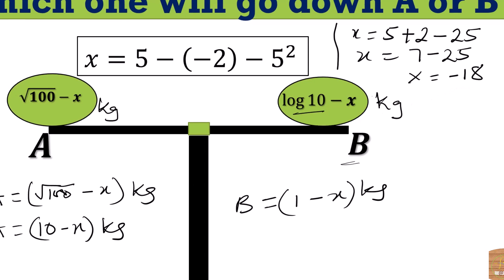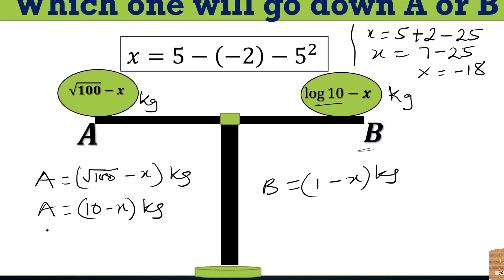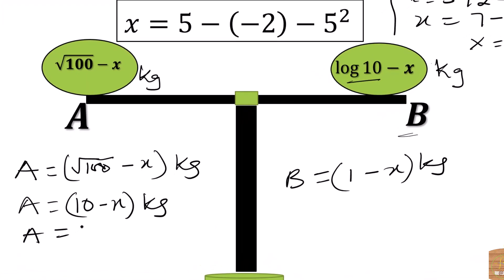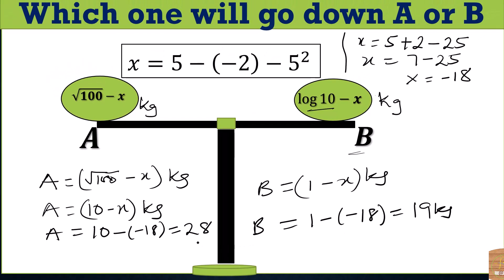We know X to be minus 18, so let's substitute X. We have A to be 10 minus minus 18, which is 10 plus 18, which is 28. Then B will be 1 minus minus 18, which is 19 kg. So A will go down since A is heavier than B.